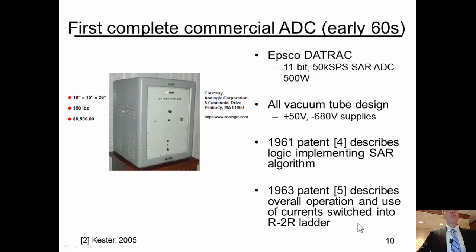If you move forward a little bit further, this is actually the first commercially available ADC. It was called the DATRAC. It happened to be a SAR ADC, a 50-kilosample per second SAR ADC. It was massive. You can see a picture of it. It weighed a couple hundred pounds. It cost almost $10,000 in 1960 dollars. That really was a lot of money. And it wasn't exactly low power. It was half a kilowatt. But then again, it used a 700 volt supply. So what do you really expect?